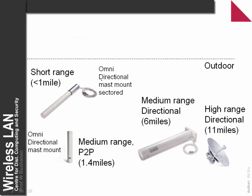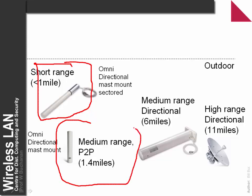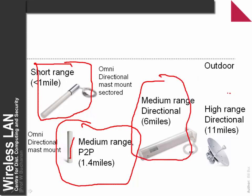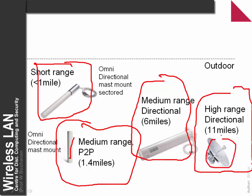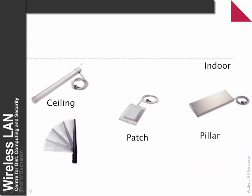For outdoor use: for shorter ranges we typically use mast-mounted or sectored antennas; for medium range, directional antennas; for higher range, Yagis; and for much longer ranges up to 11 miles, dish antennas. For indoor use, we have ceiling-mounted, dipole, patch, and pillar antennas.